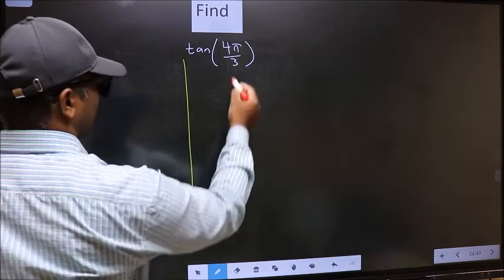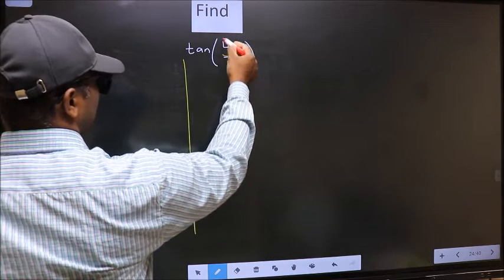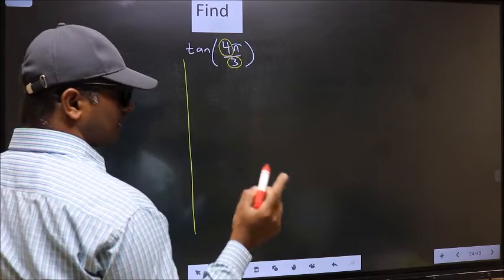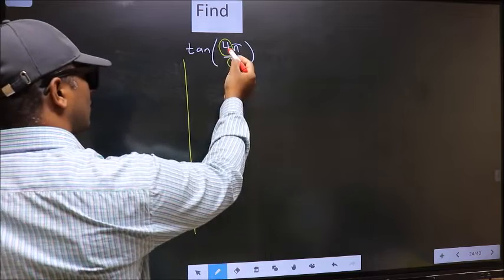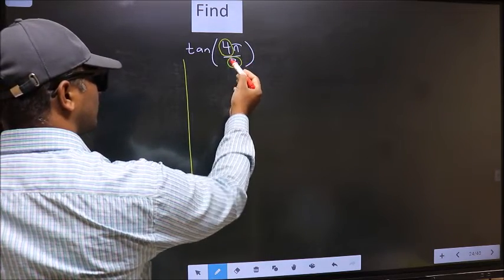In the denominator we have 3. In the numerator 4. Now you should check 4 is close to which multiple of 3.